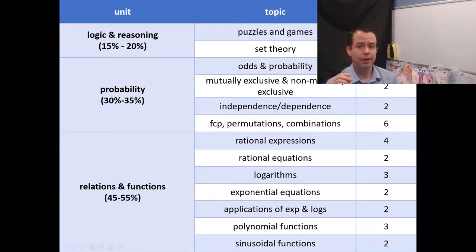Inside logic and reasoning you've got puzzles and games and set theory, so you're looking at about seven questions on your exam, about 15 to 20 percent. Probability - you're looking at odds, mutually exclusive and non-mutually exclusive events, independent and dependent events, then the fundamental counting principle, permutations and combinations are also in there. So that's about a third of your exam. The biggest portion is relations and functions, which is about half of your exam. In there there'll be rational expressions and rational equations, so you're looking at like six questions on rational expressions and equations. Then you've got logarithms, exponential equations and applications, so that's all exponents and logs here, you're looking at about seven questions there, and then five questions around polynomials and sinusoidal functions.